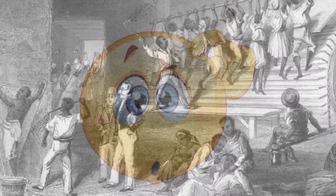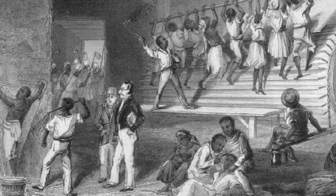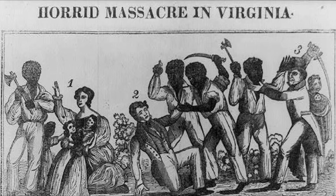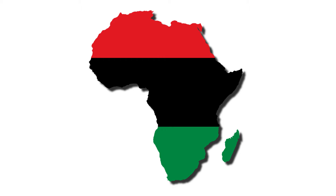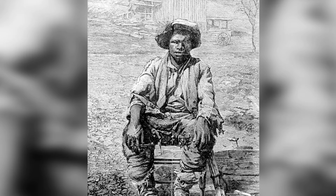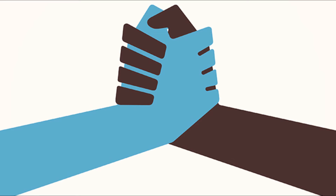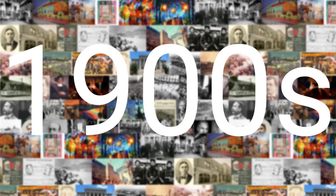Pan-Africanism's origins are found in the struggles of the African people against enslavement and colonization, and may be traced back to the first resistance on slave ships, rebellions, through the constant plantation and colonial uprisings, and the Back to Africa movements of the 1800s. Even though the idea of Pan-Africanism was immersed in such slave rebellions as Gabriel Procer's, the 20th century is where Pan-Africanism began to take form as a political movement.